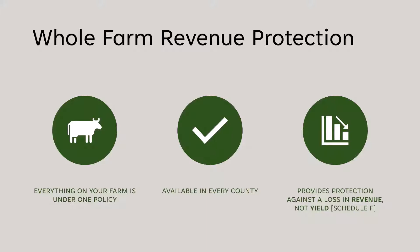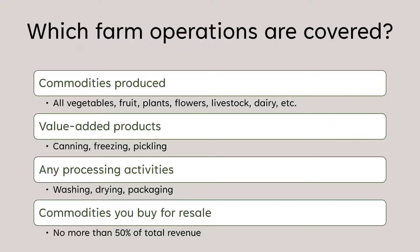What separates whole farm from MPCI is that it protects against a loss in revenue — not looking at how many bushels of corn or pounds of strawberries you got, but at your revenue for the whole farm combined. Farm operations covered include all commodities you produce: vegetables, fruit, plants, flowers, livestock, and more.